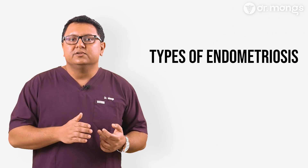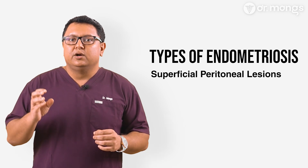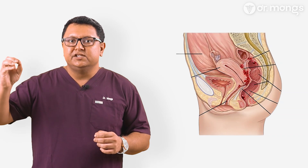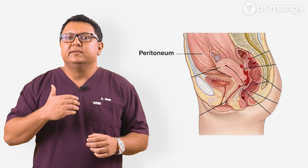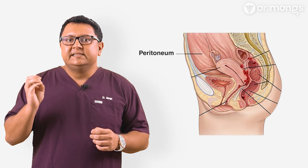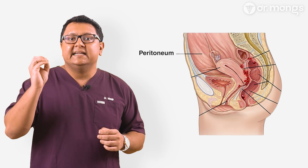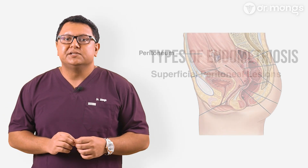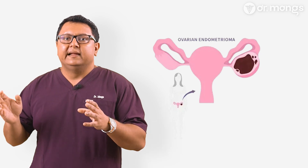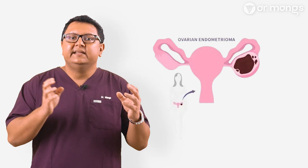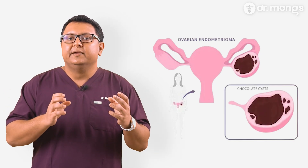There are several types of endometriosis based on where the tissue grows. Superficial peritoneal lesions are the most common form, where the endometriosis tissue is found on the peritoneum, which is the lining of the pelvic cavity and the abdomen. These can be of different appearances, and it takes an experienced surgical eye to identify all the different types of lesions. Ovarian endometriomas are cysts filled with old blood that develop within the ovaries, often referred to as chocolate cysts due to their dark appearance.